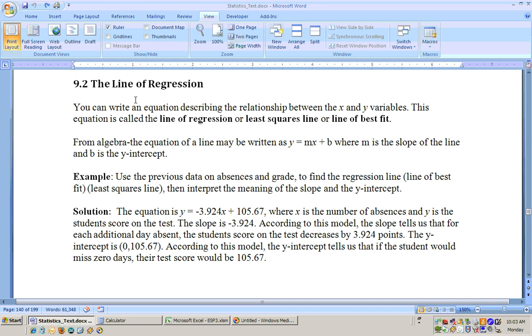Section 9.2 is on the line of regression, and you can write an equation describing the relationship between the x and y variables. This equation is called your line of regression, or your least squares line, or your line of best fit. From algebra, we know that the equation of a line is y equals mx plus b, where m is the slope and b is the y-intercept.